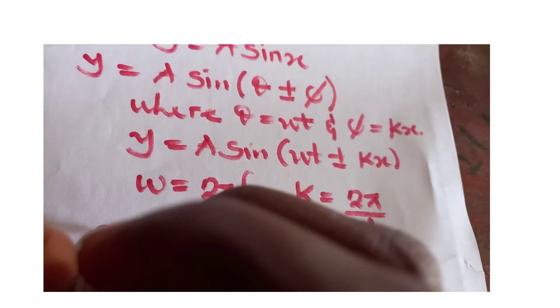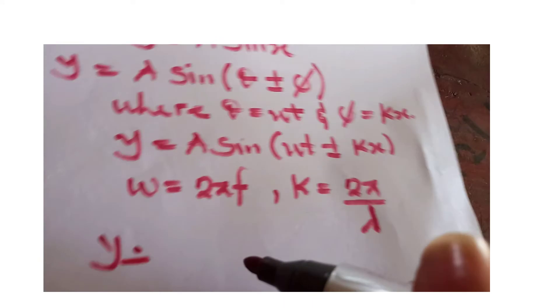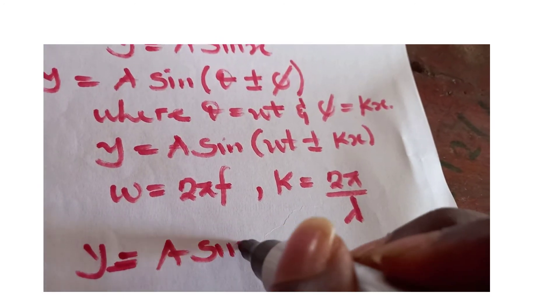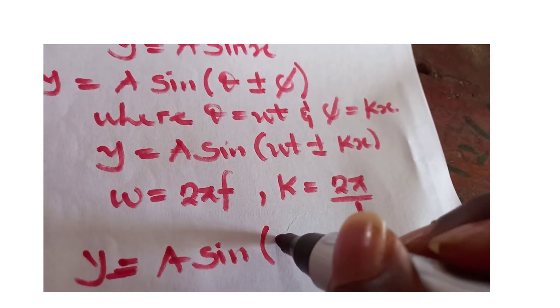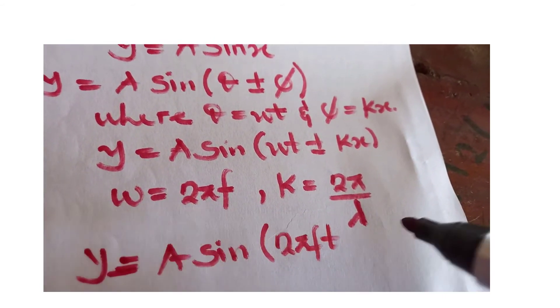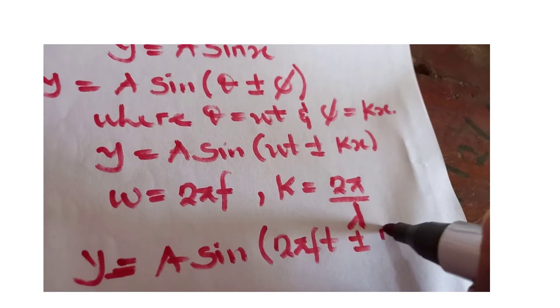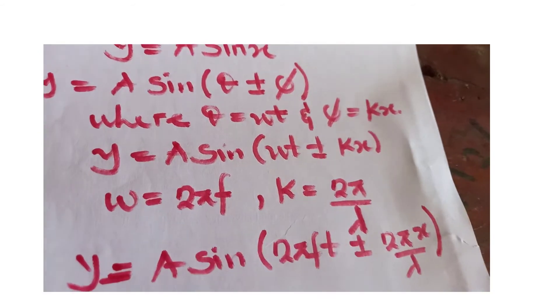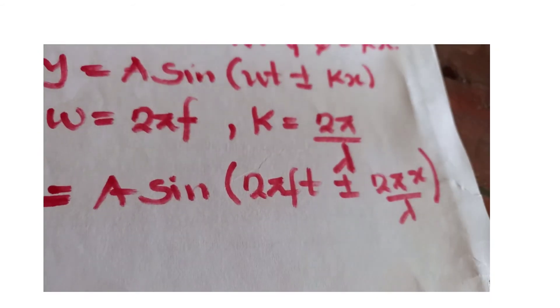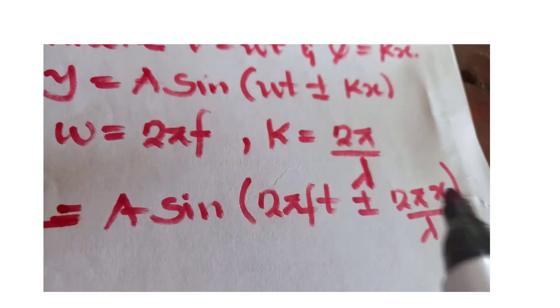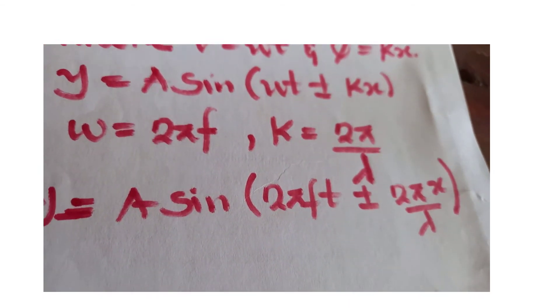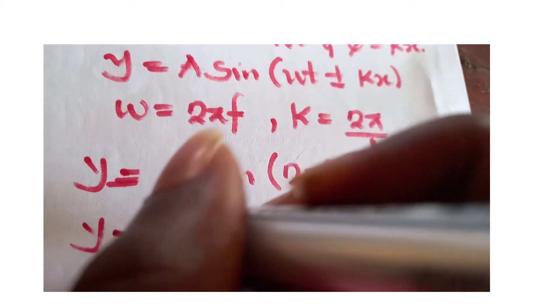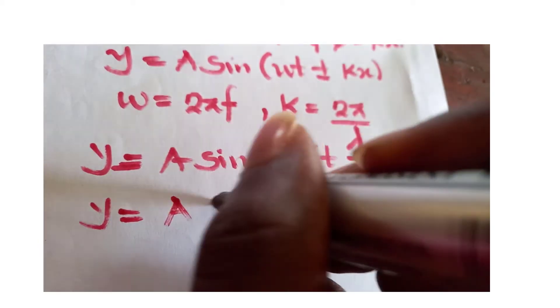So from here we can see that y is equal to A sine 2πft plus or minus 2πx over lambda. From here, 2π is common, we can factorize. When we factorize out 2π, we have y equal to A sine.